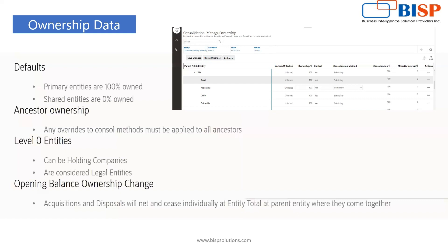Level-zero entities can be holding companies and are considered as legal entities. For opening balance ownership chain, every closing balance goes to the next year's opening balance. If there is a reduction or deduction in ownership, at the point of disposals the changes will go through, but if we are increasing our ownership through acquisitions, the ownership percentage will increase accordingly.